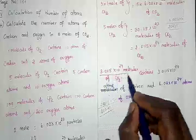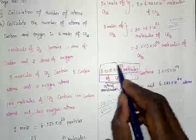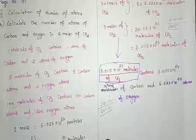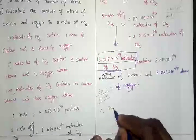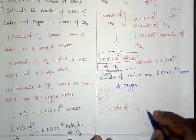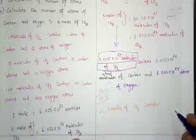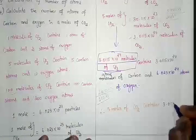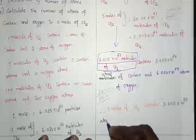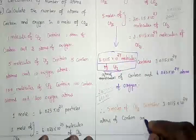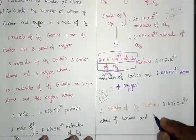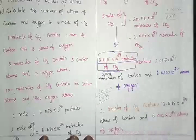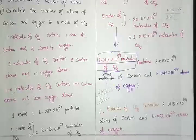So I can replace the molecules term with five moles because both are equal. The final answer: five moles of carbon dioxide contains 3.0115 × 10²³ atoms of carbon and 6.023 × 10²⁴ atoms of oxygen. I hope this video is very helpful in learning this problem in a conceptual manner.